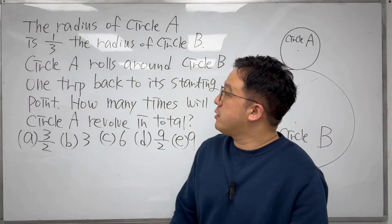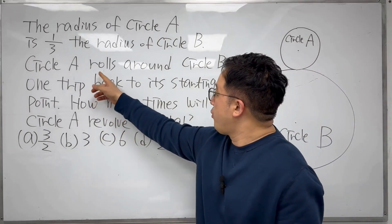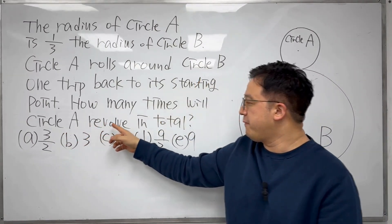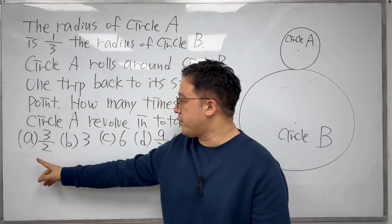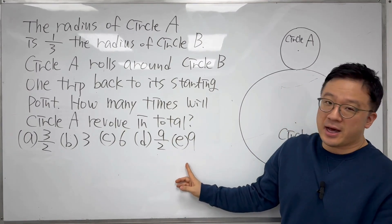So the question was: the radius of circle A is one-third the radius of circle B, and circle A rolls around circle B one trip back to the starting point. How many times will circle A revolve in total? The options were: A) 3/2, B) 3, C) 6, D) 9/2, and E) 9.